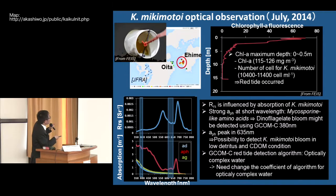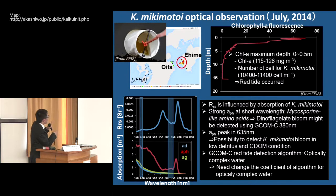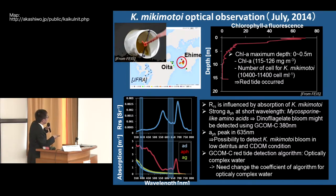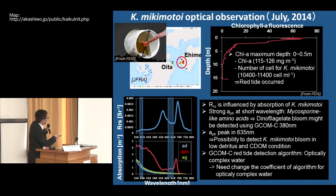That means dinoflagellate blooms such as Cochlodinium polykrikoides and Karenia mikimotoi might be detected using the 380-nanometer band. The phytoplankton absorption peak at 635 nanometers shows a very small peak, but when Karenia mikimotoi cell concentration increases, that peak also increases. So there is a possibility to detect Karenia mikimotoi bloom under low detritus and sediment conditions. However, the GCOMC red tide detection algorithm cannot detect red tide in optically complex water, so it is necessary to change the algorithm coefficients for optically complex water.